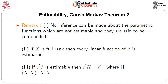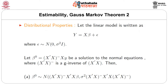Remark one: no inference can be made about the parametric functions which are not estimable, and they are said to be confounded. Some students of linear models are also confounded with this result. Point two: if X is full rank then every linear function of beta is estimable. Point three: if c-transpose beta is estimable, then c-transpose H equals c-transpose, where H is a certain generalized inverse expression.